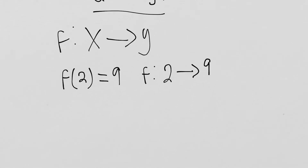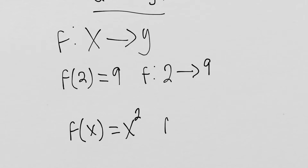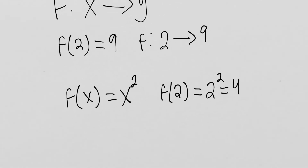As an example, our input x — what we're going to do to it is square it. So f of x equals x squared. Then if I say f of 2, that's going to be 2 squared, which is 4. So my function f, which is just x squared, sends my input 2 to the output 4 through the operation of squaring.